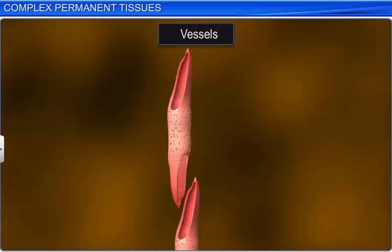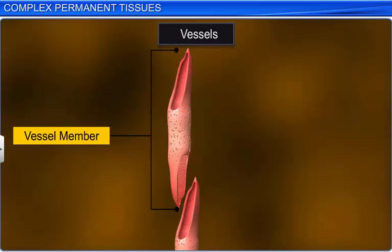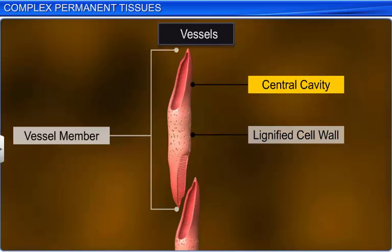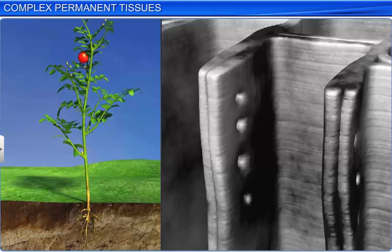Vessels are long tube-like structures composed of many cells called vessel members. Vessel members have lignified walls and a large central cavity. They are interconnected through perforations in their common walls. Typically, vessels are found in all angiosperms, and vessel cells do not have protoplasm.